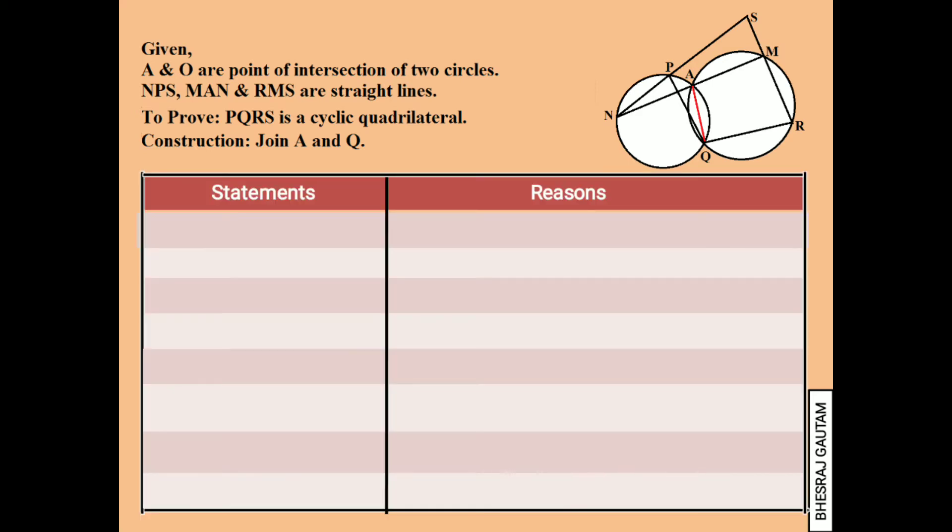In the left-sided circle, angle PNA and angle PQA are inscribed angles both standing on the same arc PA, so they are equal. Now in the right-sided circle, angle AMS is the exterior angle to which opposite interior angle is angle AQR. So based on the property of cyclic quadrilateral, we write interior angle AQR is equal to exterior angle AMS.